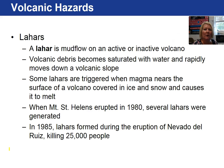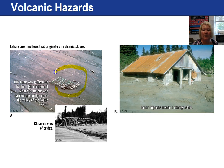Another volcanic hazard is called lahars — these are mud flows and can occur on active or inactive volcanoes. When volcanic debris becomes saturated with water due to heavy rainfall, the material may loosen and race down the slope of the mountain. Mount St. Helens' 1980 eruption generated several lahars. In 1985, lahars were responsible for killing 25,000 people during the eruption of Nevado del Ruiz. Check out this bridge — the lahar, this mud flow, is carrying a whole bridge with it.